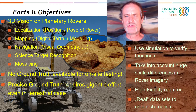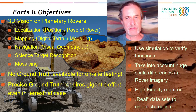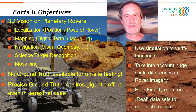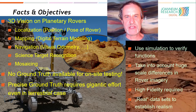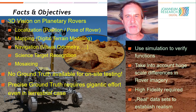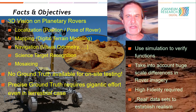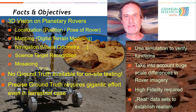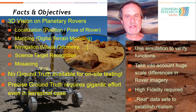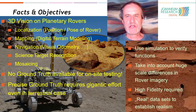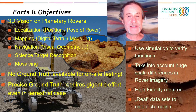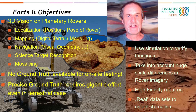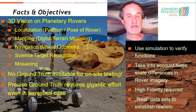Our approach is therefore to use simulations for generating ground truth. Note that we also have to account for huge scale differences within single rover images, often millimeters on the bottom to kilometers per pixel at the horizon. To get realistic ground truth requires high fidelity, meaning close-to-reality appearance. So we suggest to use real datasets, instead of simulated ones, as a basis.